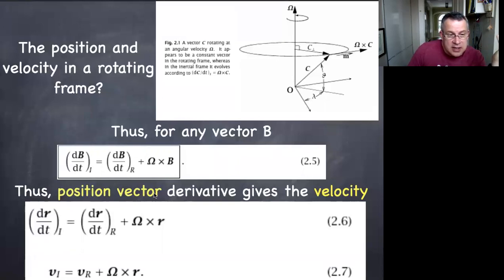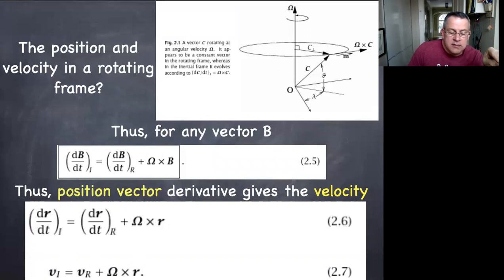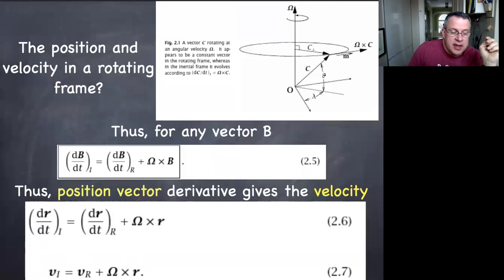Now consider the position vector. If we take the time derivative of the position vector, we get the velocity. The velocity in the inertial frame equals the velocity in the rotating frame plus omega cross r. The velocity in the inertial frame is sometimes called the absolute velocity; the velocity in the rotating frame is called the relative velocity; and omega cross r is called the planetary velocity or frame velocity.